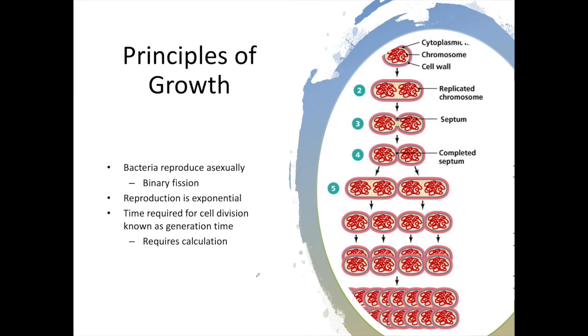In principles of growth, one thing to always note is bacteria reproduce asexually through a process known as binary fission. They reproduce by dividing symmetrically, making a copy of their genetic material, plasmids, chromosomes, and ribosomes, then dividing in half. This causes reproduction of bacteria to be an exponential process, which we'll see when we calculate growth curves.